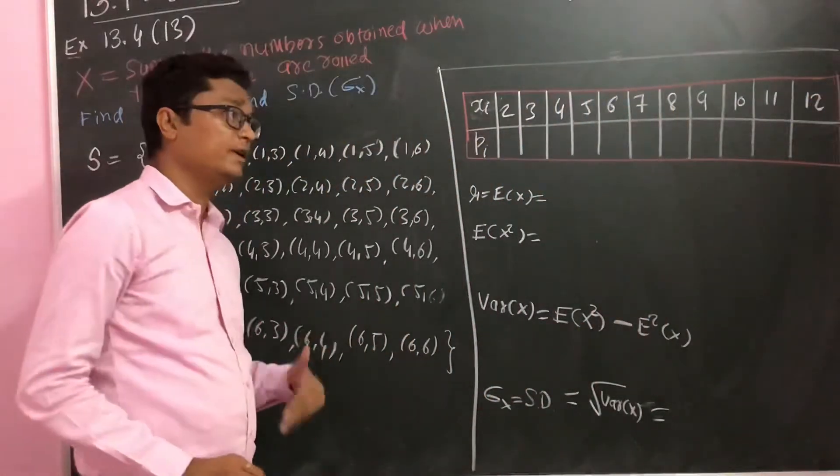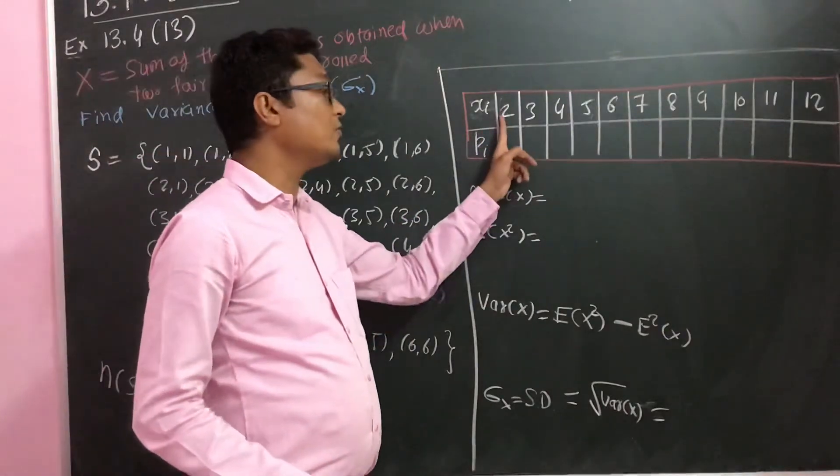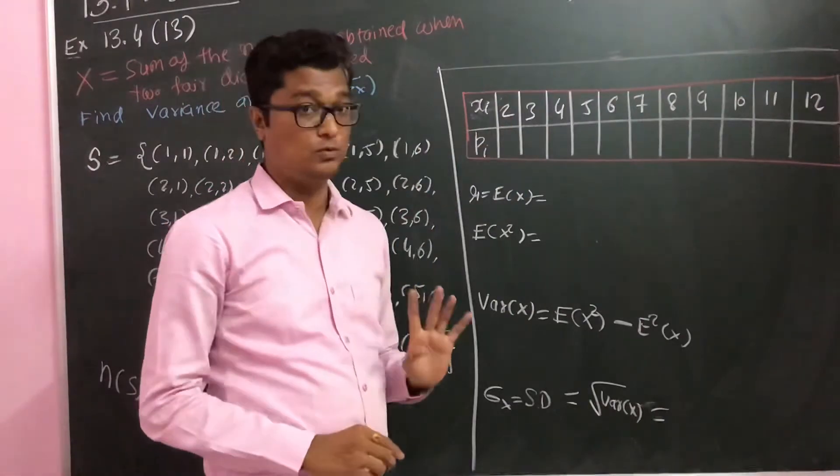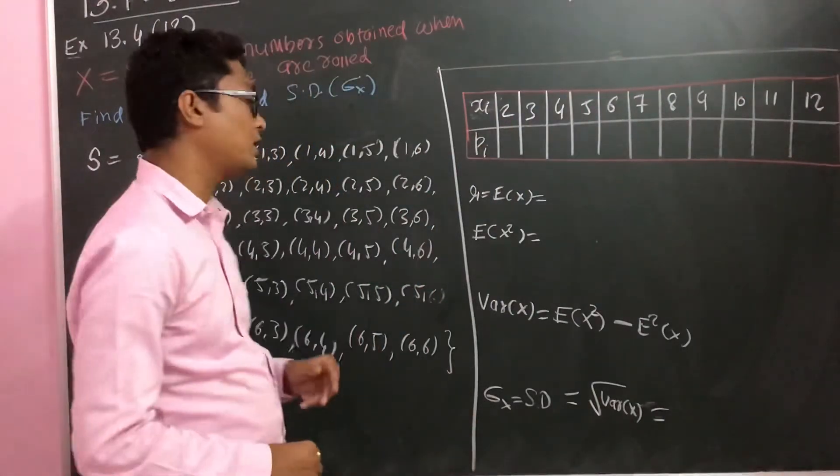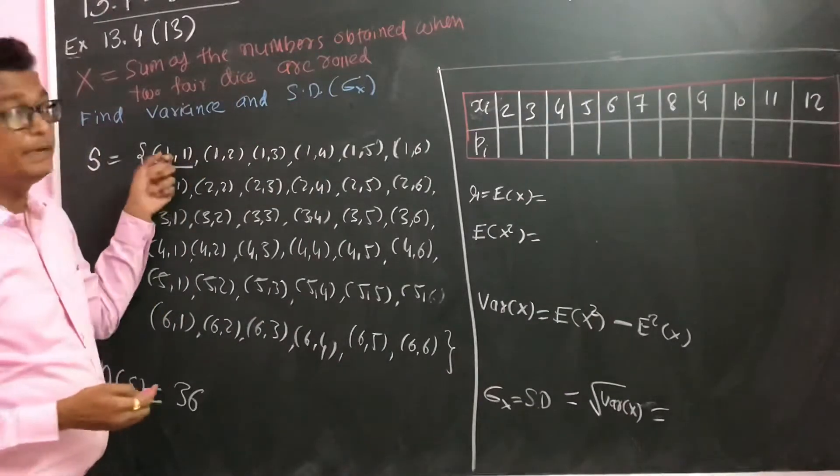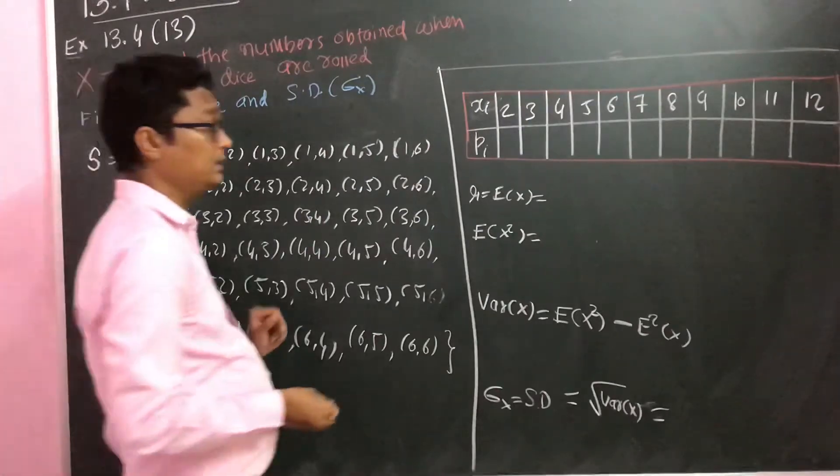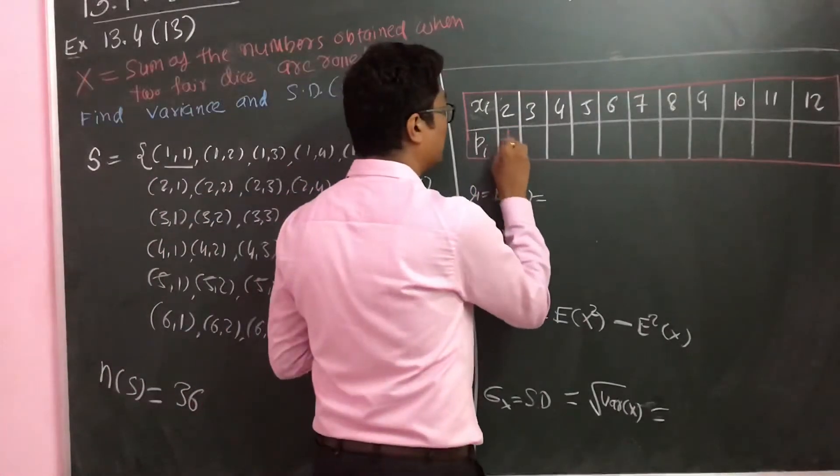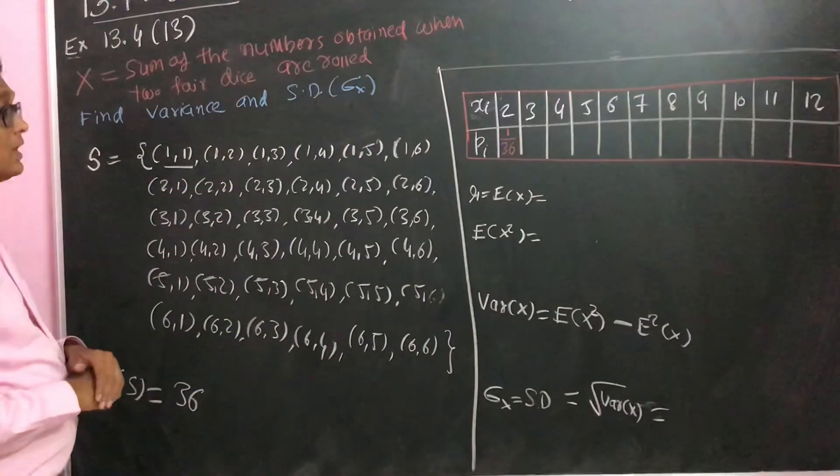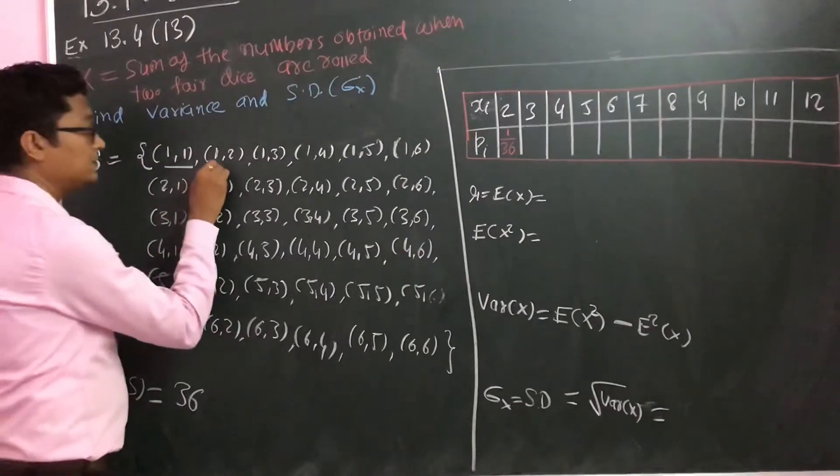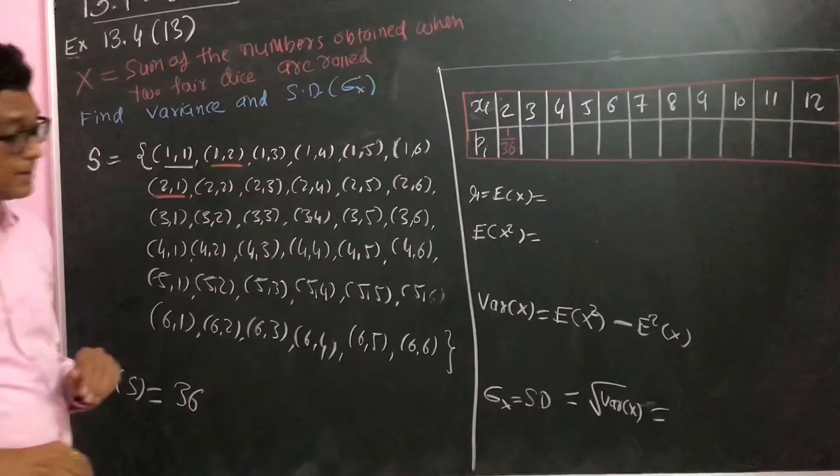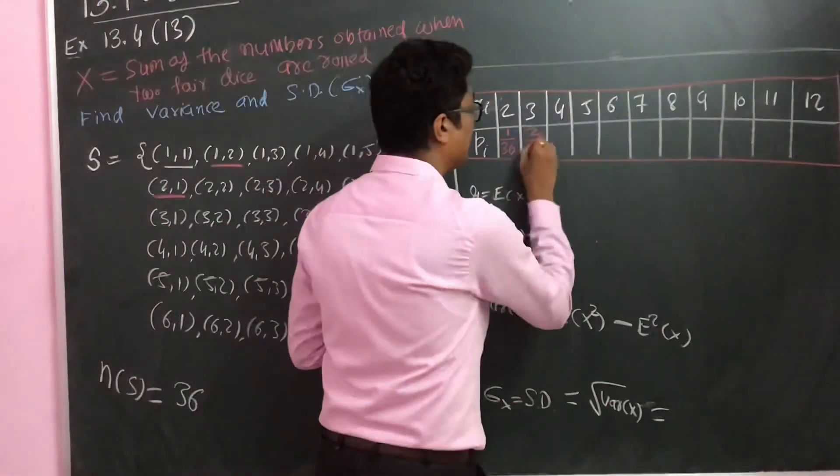Now you have to find out when the sum of the two numbers is equal to 2. This is possible for 1-1 combination only, out of 36 combinations. So here we have 1 upon 36.